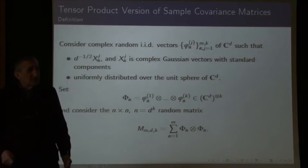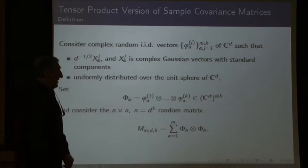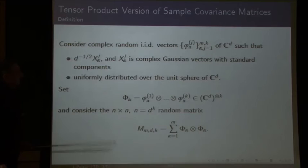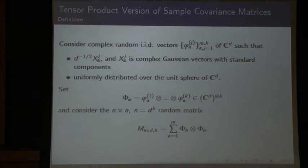Now I turn to the second class of problems, also coming from quantum informatics but somewhat different. We recall that the sample covariance matrix can be written as a sum of rank-one operators, where for each column tau of the data matrix X, we form the outer product of the corresponding vector with itself.